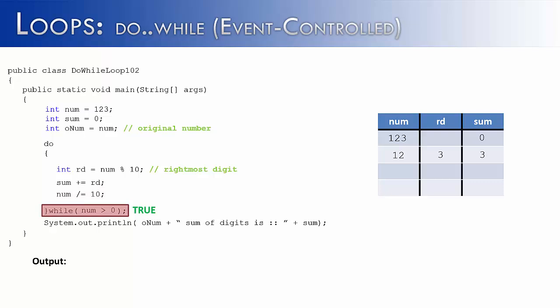Check the condition. 12 is greater than 0, so we continue on. Next, we would isolate the rightmost digit, which now, because num is 12, the rightmost digit is 2. So we're going to take that 2 and add it to sum. And so 3 plus 2 is 5, so therefore sum is now 5. We're going to lop off the rightmost digit, which is the 2. And so now num is 1. 1 is greater than 0, so we continue on.